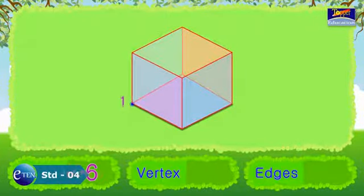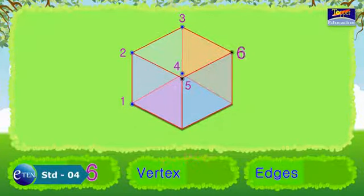How many corners? One, two, three, four, five, six, seven, eight. It has eight vertices.